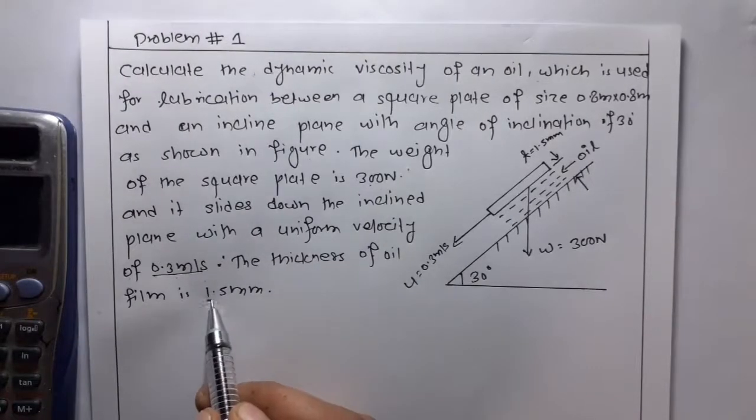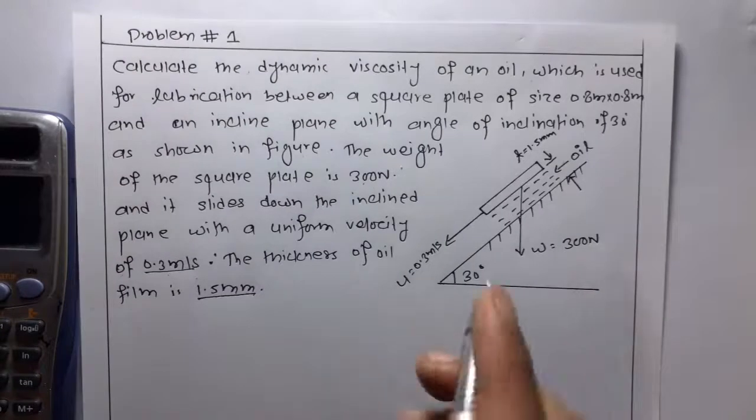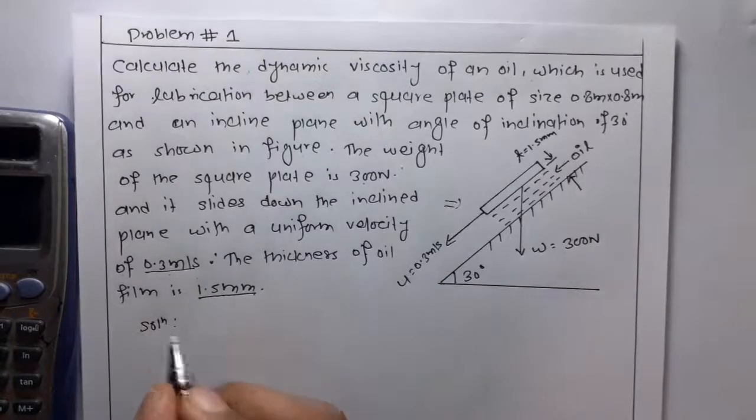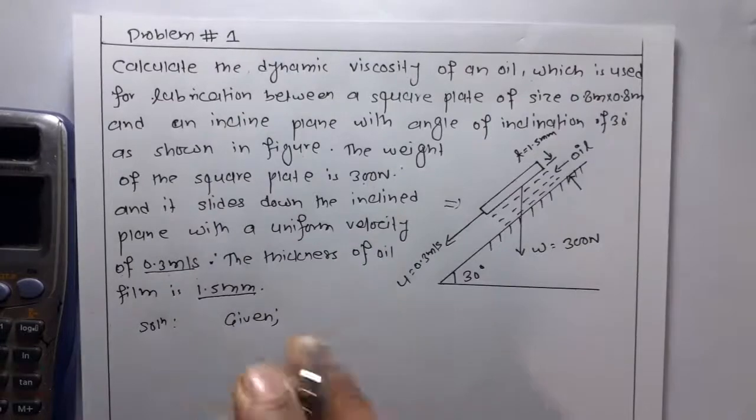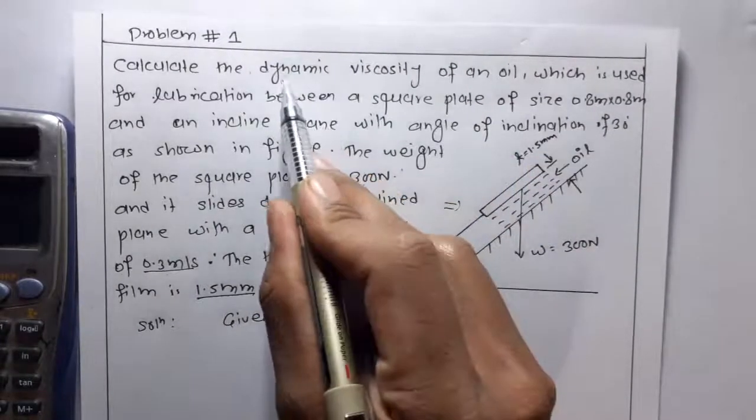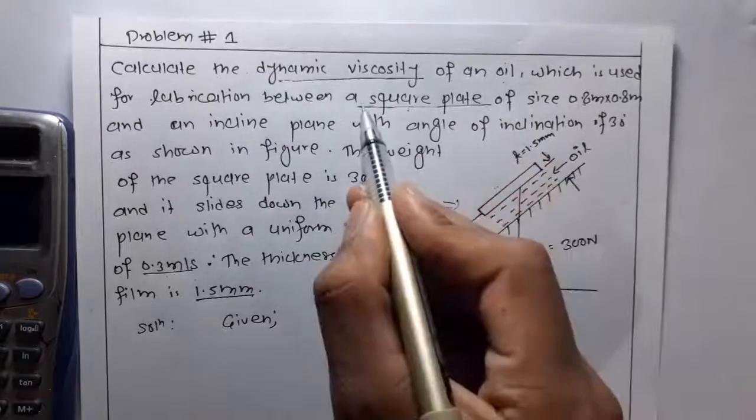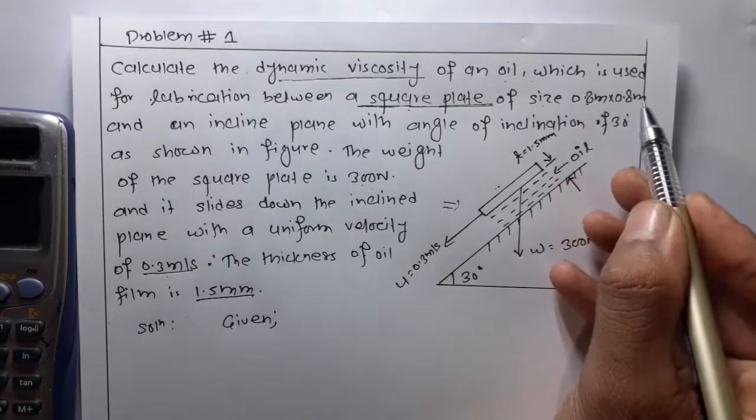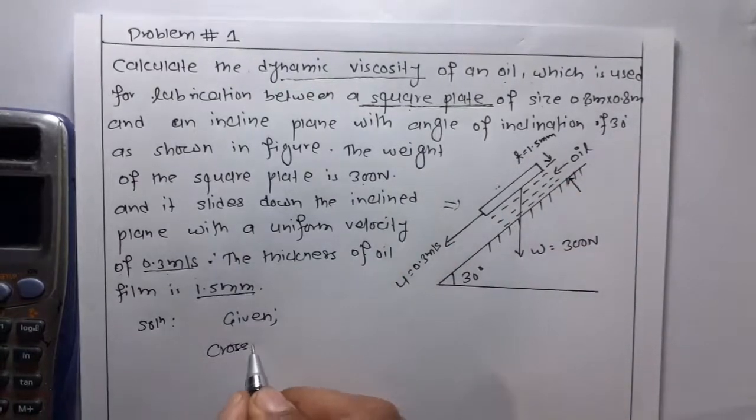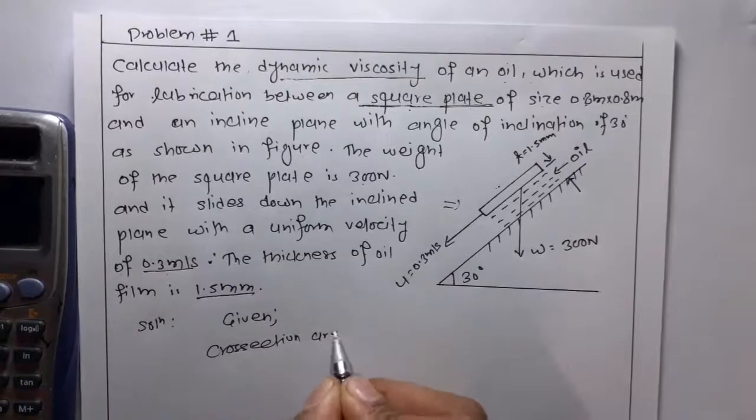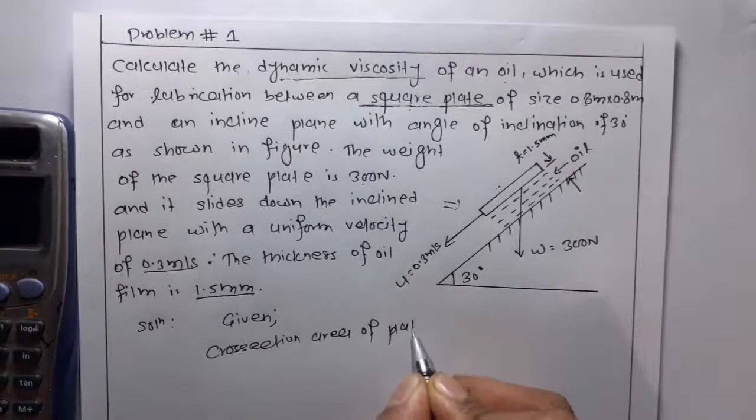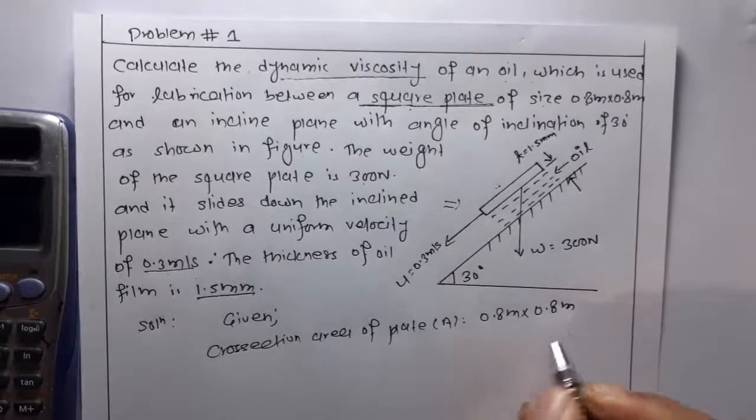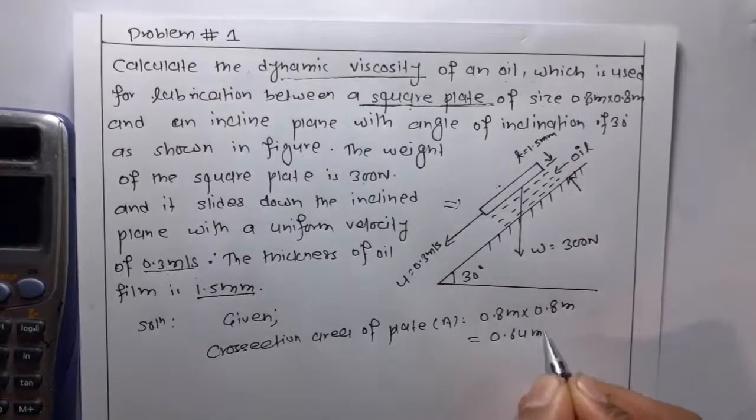The thickness of the oil film is 1.5 mm and this is the figure for this question. For the solution, first given, we have to find the dynamic viscosity of an oil and the size of the plate is 0.8 meter by 0.8 meter. That means the cross-section area of plate A is equal to 0.8 meter times 0.8 meter which is 0.64 meter square.